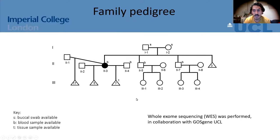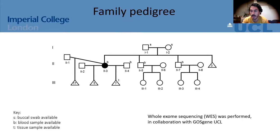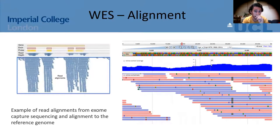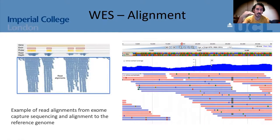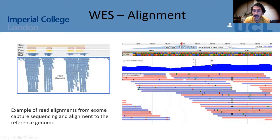We decided to do whole exome sequencing in this family — the patient, husband, brothers, and tissues — performed in collaboration with GOSgene at UCL. Whole exome sequencing is next-generation sequencing where the entire coding part of the genome is sequenced in one go. I'll show an example of read alignment: the boxes represent exons, probes amplify the different exons, and read depth indicates how many times each exon was sequenced — the more read depth, the more confident we are in the result.